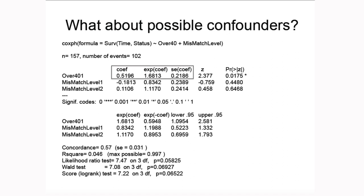What about possible confounders? We know that other factors could impact whether you experience death that are also related to age. Let's say we want to adjust for mismatch level. First we have to think through whether it makes sense conceptually, and then also compare those variables statistically — using bivariable plots, summaries, or tests to examine the association between mismatch level and age, as well as mismatch level and death. You should always think through whether a variable makes sense as a confounder and see if this is reflected in bivariable relationships between the potential confounder and both the primary explanatory variable and the outcome.